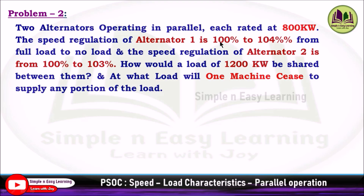Alternator 1 is 100% to 104% from full load to no load. Usually problems mention from no load to full load there is a drooping characteristic, but here the problem gives from full load to no load the speed regulation is 100% to 104%. That means 4% droop for alternator 1 and similarly for alternator 2 there is a 3% droop. First we need to find how the alternators share the load of 1200 kilowatt, and if one machine ceases to supply any portion of the load, what additional load is supplied by the other machine.